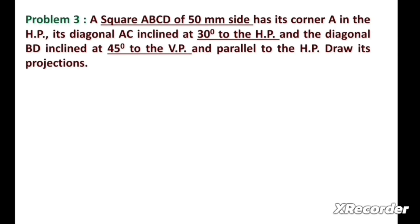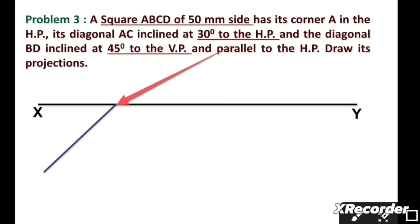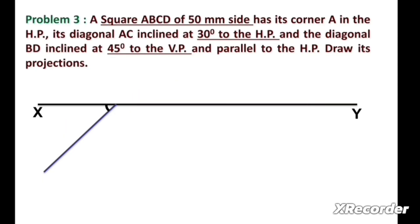To prepare the solution of this problem, first we draw a horizontal xy line as shown in the figure. Then we draw a line at an angle of 45 degrees. This point can be taken anywhere on the xy line. This angle should be 45 degrees because the square is resting on one of its corners, A. We can write down angle 45 here.